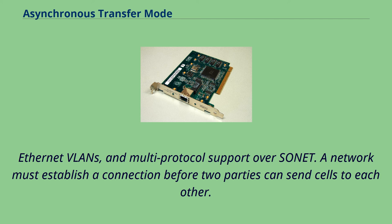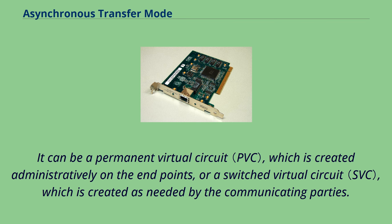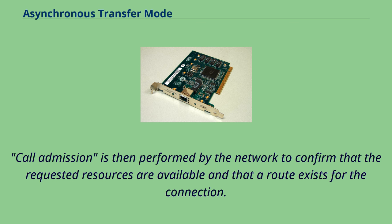A virtual circuit can be a permanent virtual circuit, which is created administratively on the endpoints, or a switched virtual circuit, which is created as needed by the communicating parties. SVC creation is managed by signaling, in which the requesting party indicates the address of the receiving party, the type of service requested, and whatever traffic parameters may be applicable to the selected service. Call admission is then performed by the network to confirm that the requested resources are available and that a route exists for the connection.